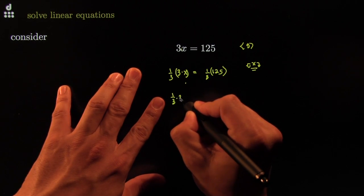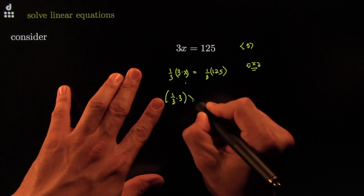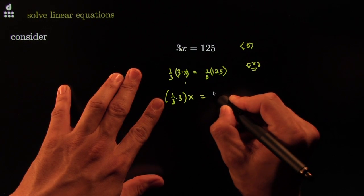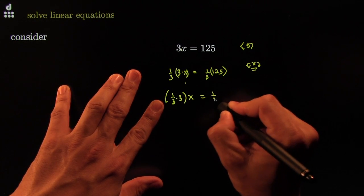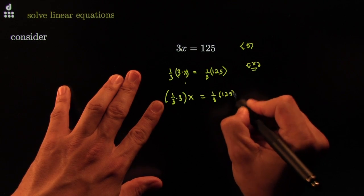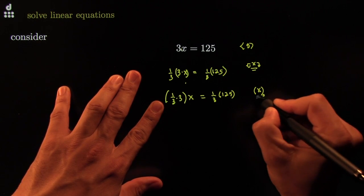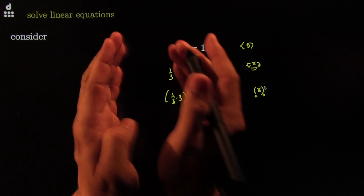So I had 1/3 times 3. Slide the parentheses over times x. And that's equal to 1 over 3 times 125. And that's called associative law of multiplication. I move the parentheses right here.